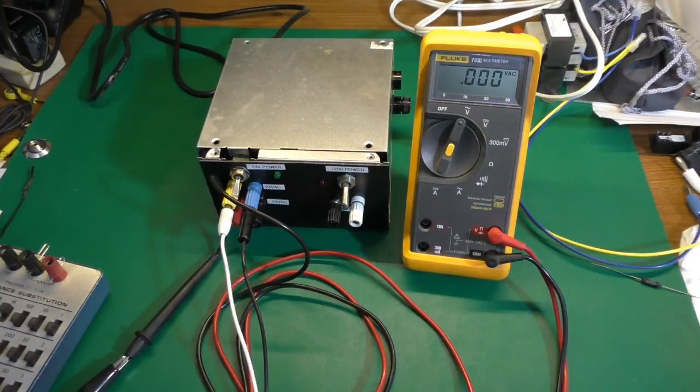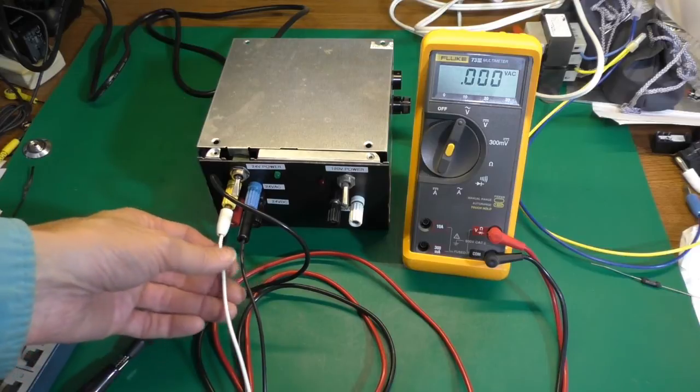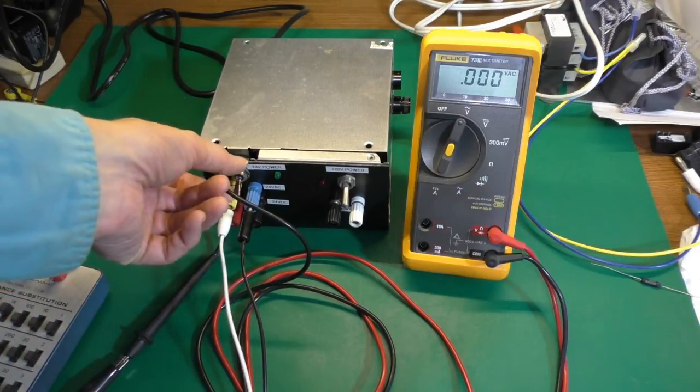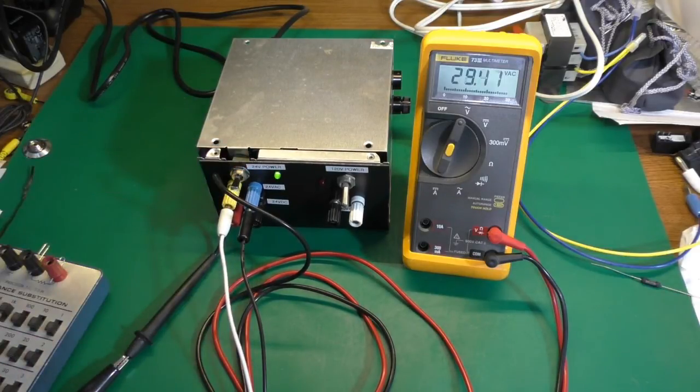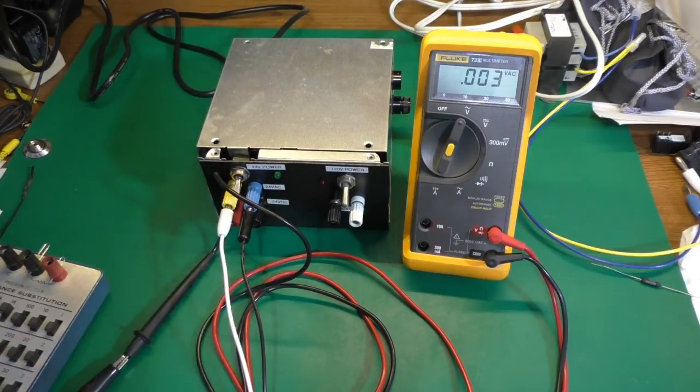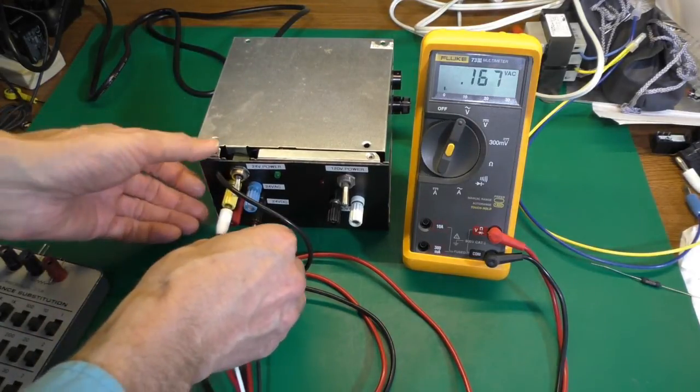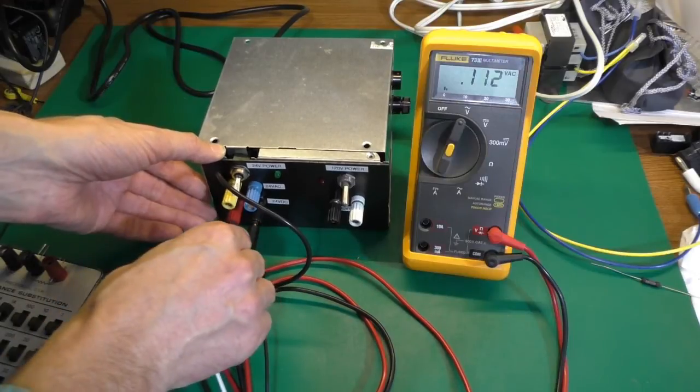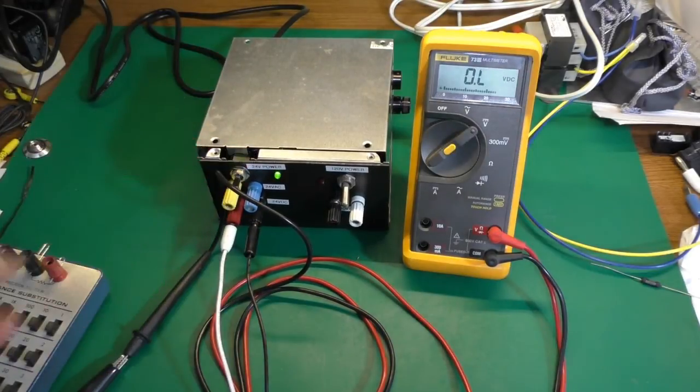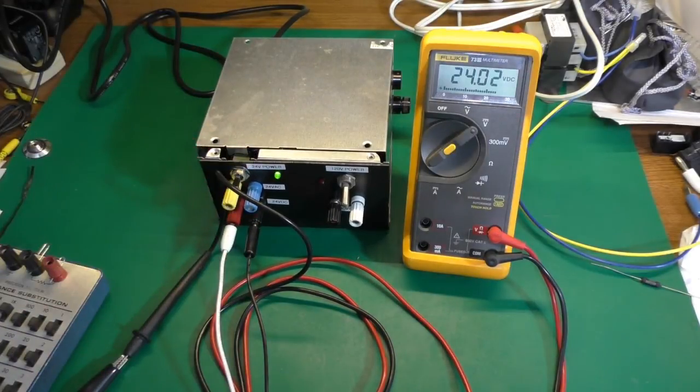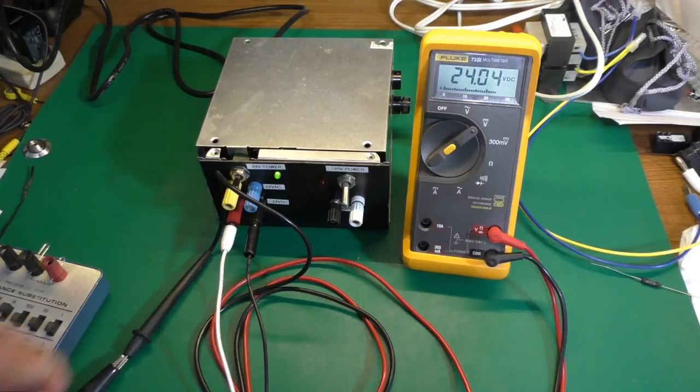Now we'll switch over to the 24 volt AC side. Got an indicator light. And we got 29 volts, that's unloaded. Now we'll do 24 volts DC. And there it is. Can't ask for more than that.